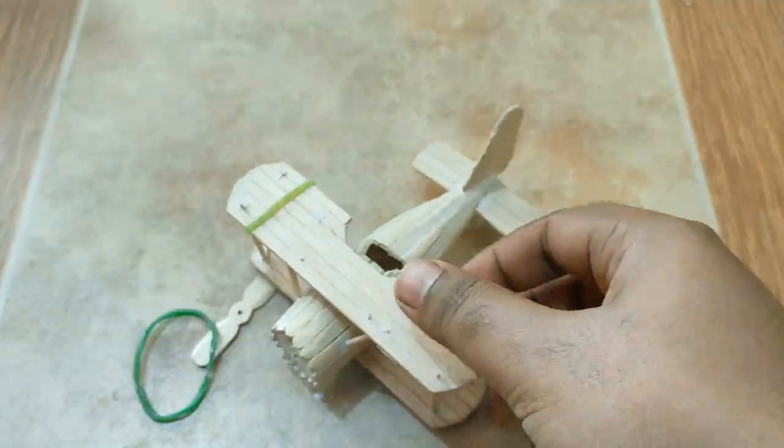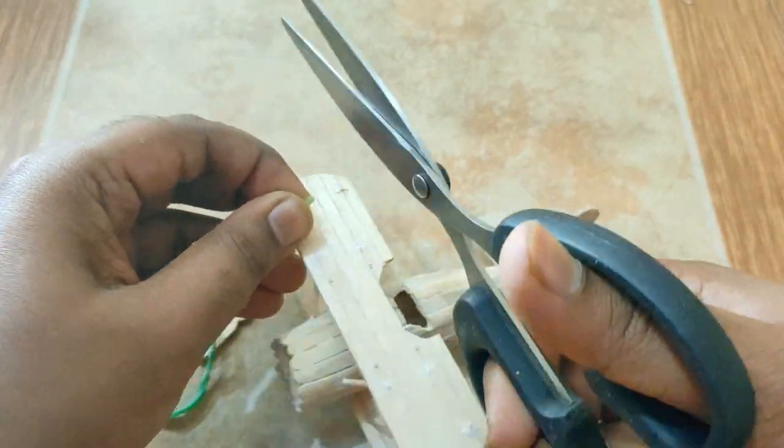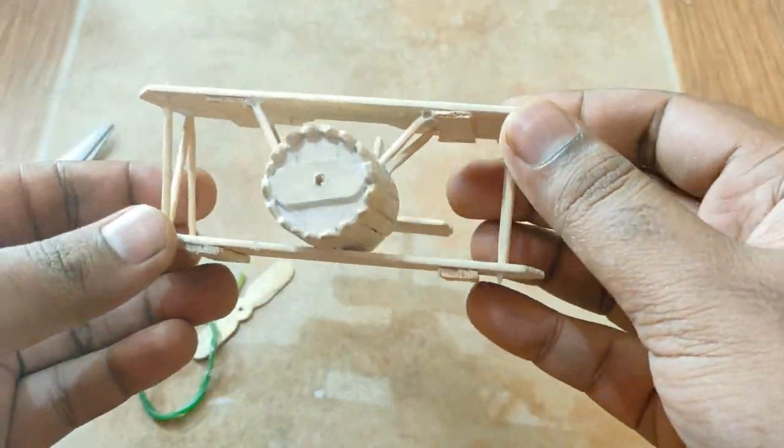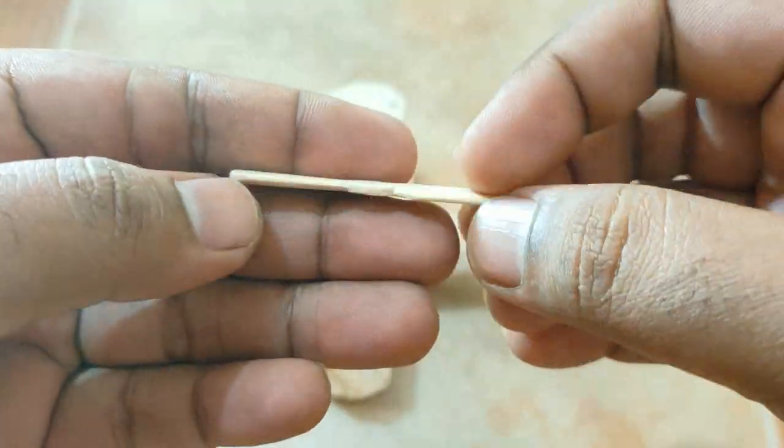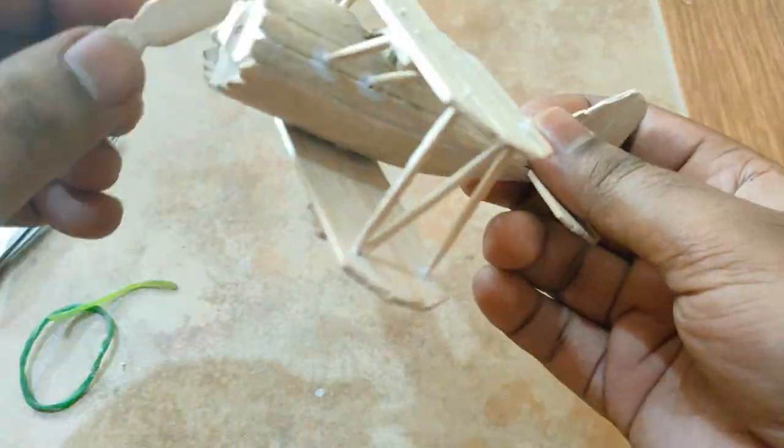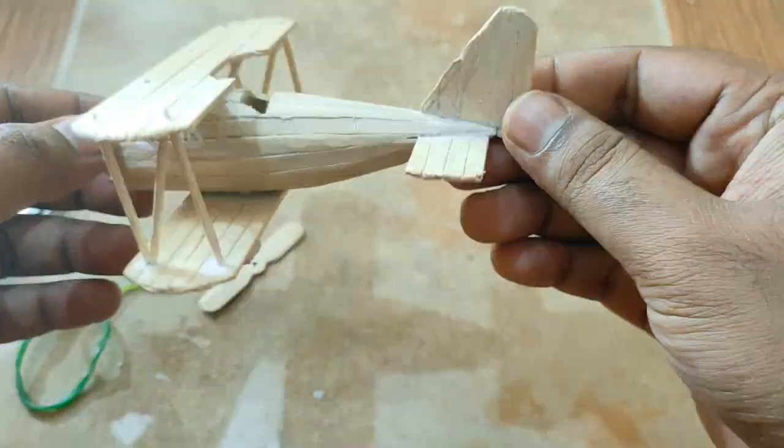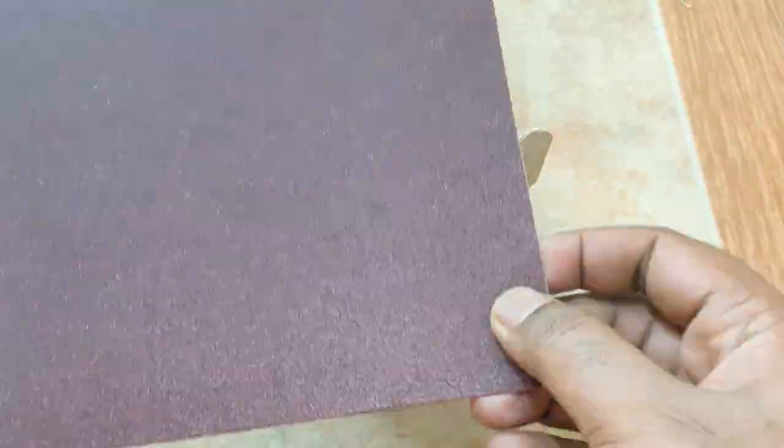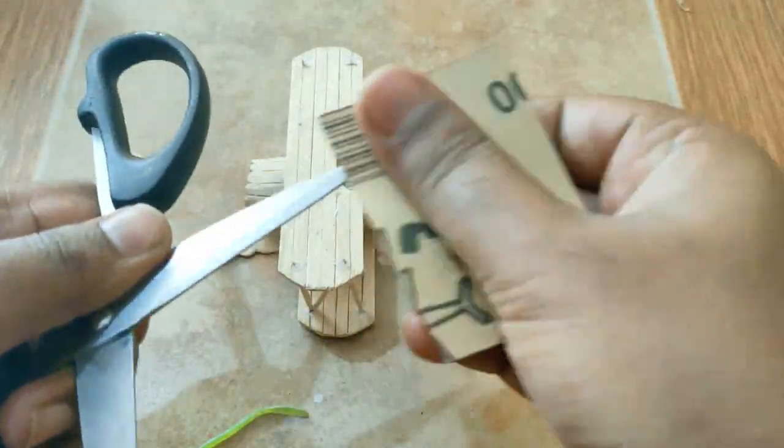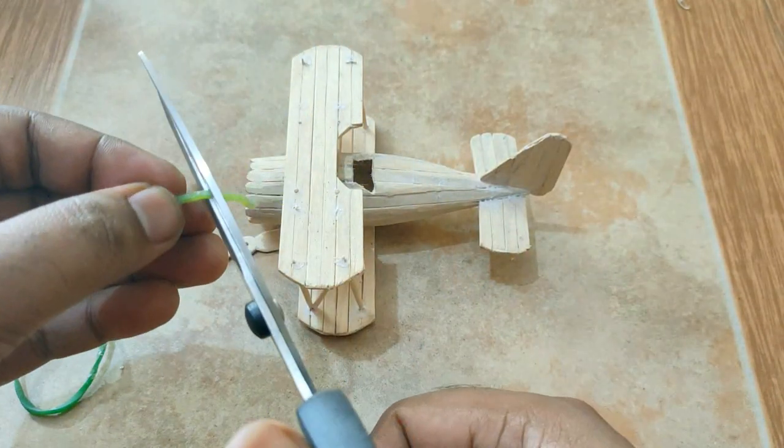Now I am removing all those rubber bands. See, after cutting these sticks with this scissor, it's no longer sharp. I made this propeller blade and I will attach this soon. Now I need to sharpen the scissor. For that, just grab a sandpaper and start rubbing. See, it's sharp now.